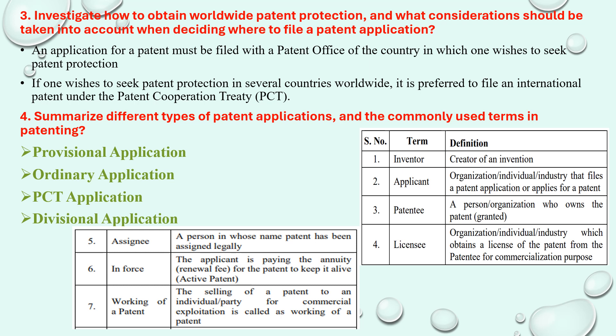There are many terms related to patenting. For example: inventor — who innovates the idea; applicant — who submits the application; patentee — who owns the particular patent that has been granted; license — once the patent is granted, the patentee must obtain a license to ensure it is protected; and also assignee, enforcement, and working of patent.